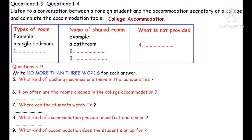Excuse me, is this the Accommodation Office? Yes, it is. My name's Wolfgang. I'm a new student here. I'm wondering if you can tell me some information about the housing arrangements at this college. Yes, certainly. Basically there are two types of accommodation. The most popular is the college accommodation, but we also offer accommodation with local families. You mean a kind of homestay? Yes, that's right.